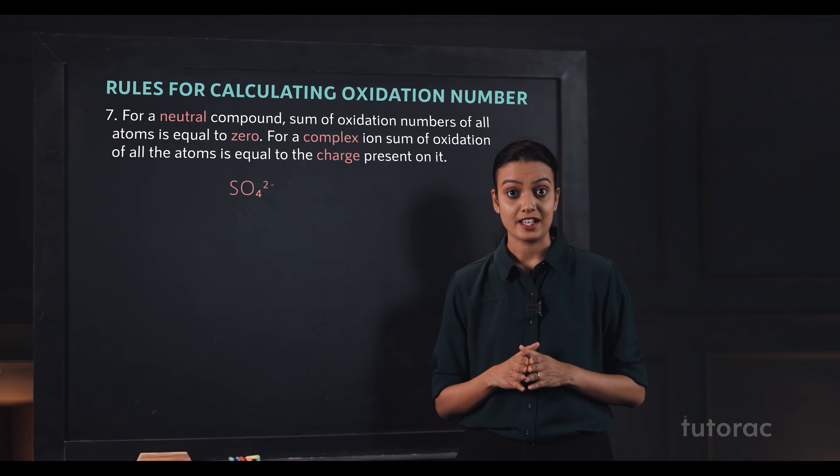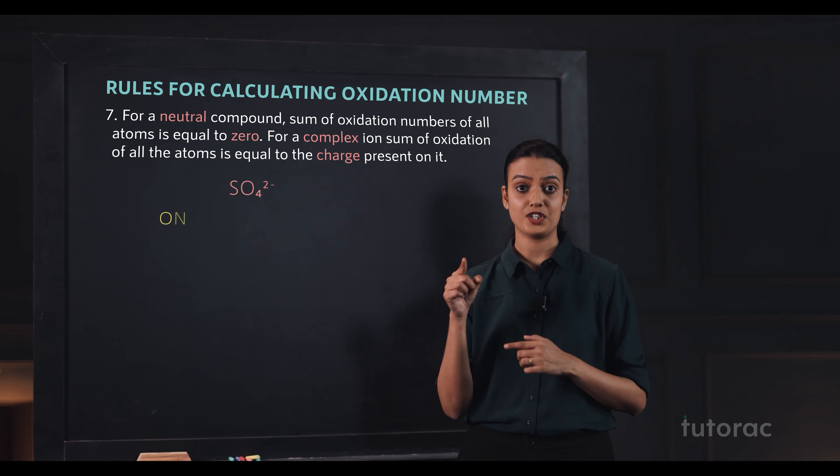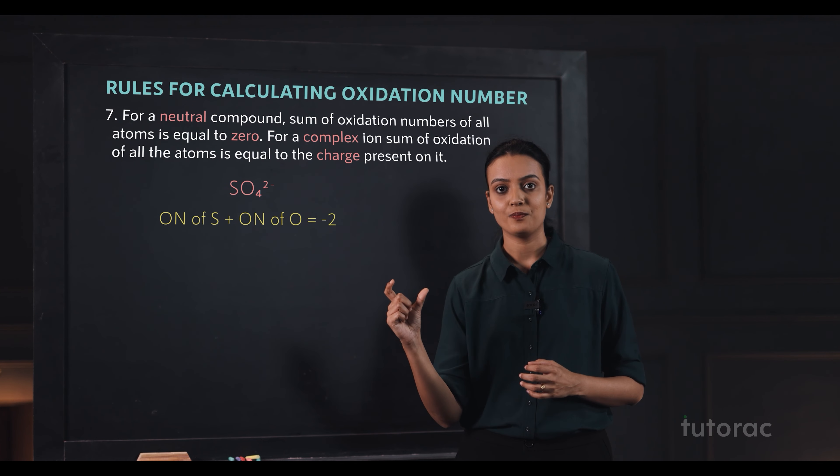Like, you can see here in the sulfate ion. The sum of oxidation numbers of sulfur and oxygen will be equal to minus 2 as minus 2 is the charge present on sulfate ion.